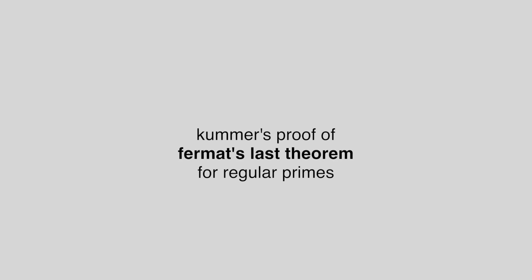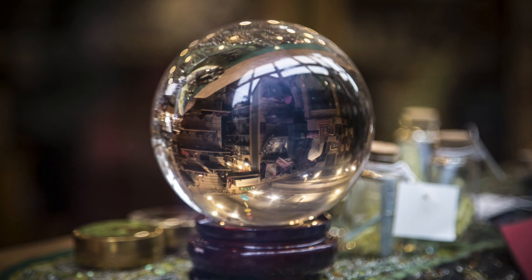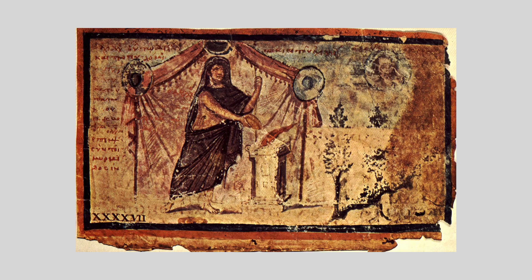We're going to start by talking about prime numbers and modular arithmetic, and our end goal is to give Kummer's proof of Fermat's Last Theorem for regular primes. Now that's quite a long way in the future, and along the way the story is going to take many twists and turns and excursions.